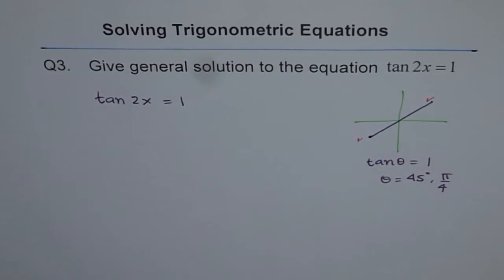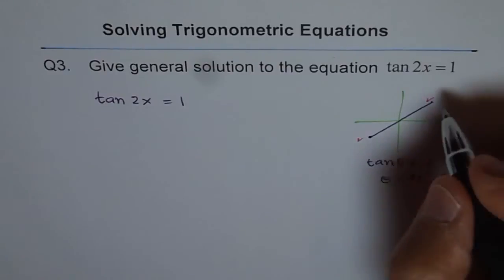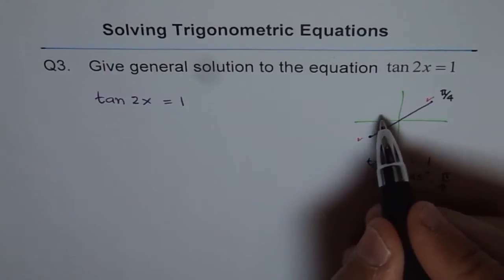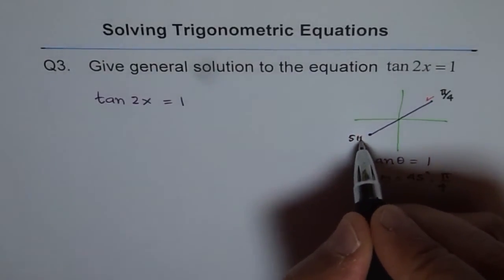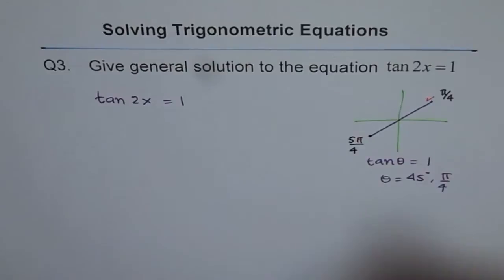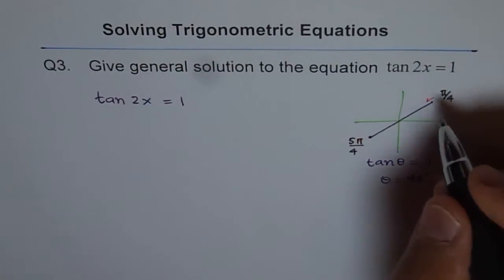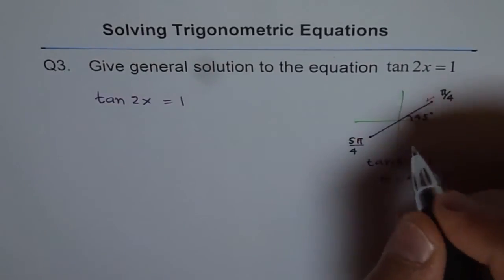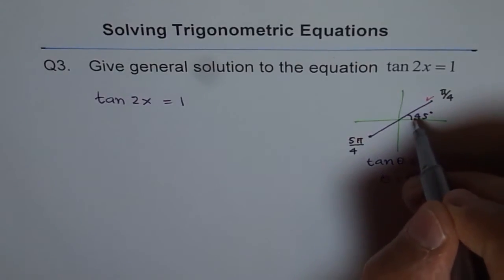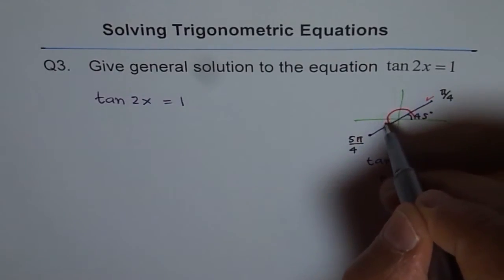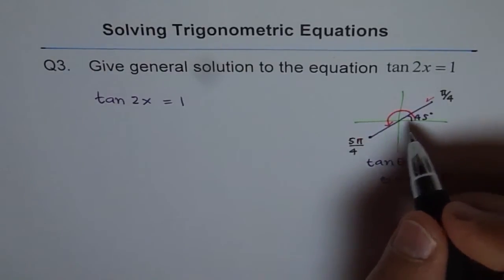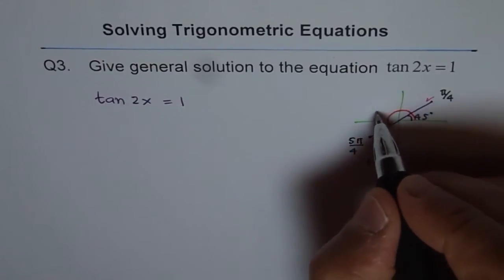And therefore, these two solutions are in radians pi by 4. So 4 pi by 4 is already there. So we have 5 pi by 4. That is in radians and in degrees. You can write this solution as 45 degrees. And then if you go 45 plus 180, that is what it is. The other angle. 45 plus 180 gives me 225 degrees.